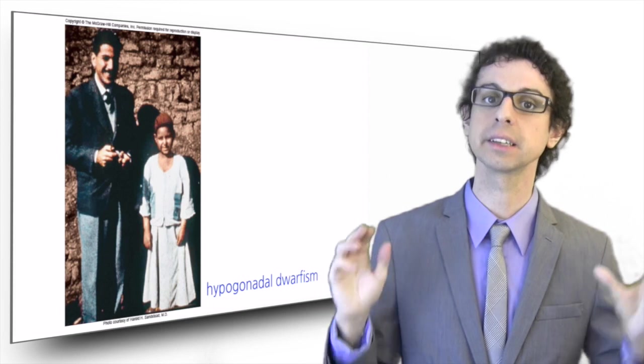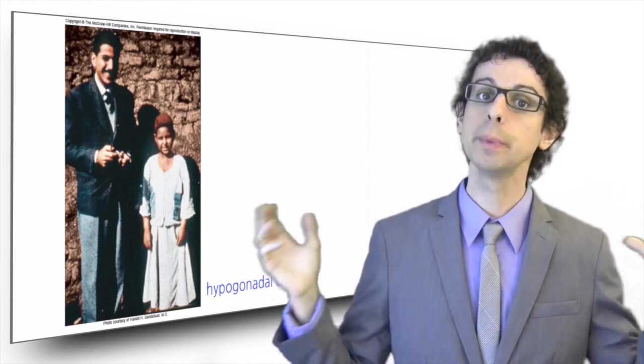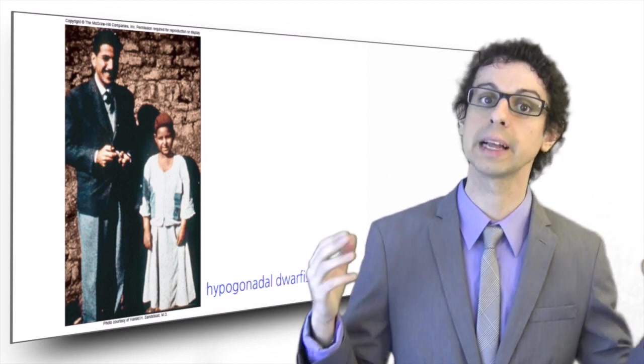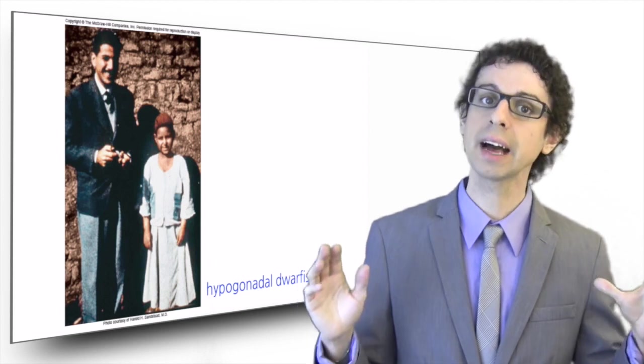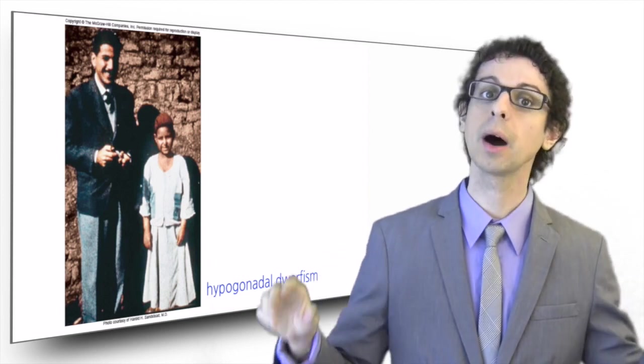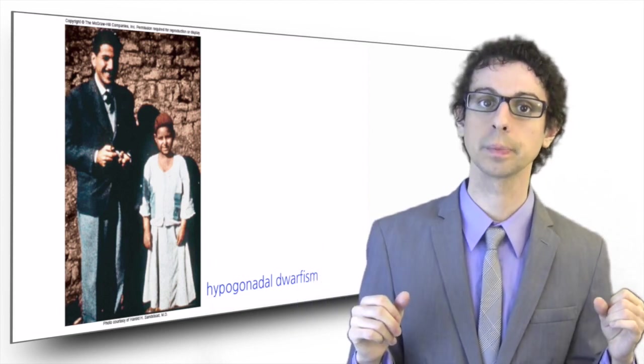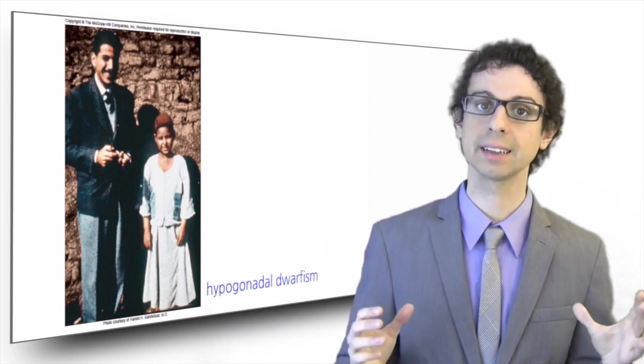On the left you can see an adult and on the right what based on height and build looks probably like a seven-year-old kid. In fact, it was 16 years old but only 50 inches tall. Besides severely stunted growth,